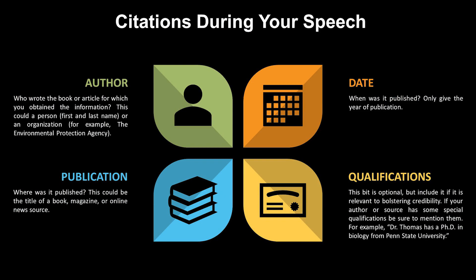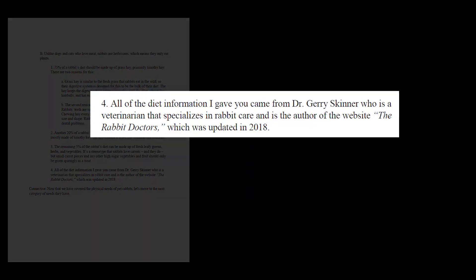If you put this information in your outline from the start, it's much easier to cite it when it comes time to perform. It doesn't matter which order you present this information in, as long as you have all three or four pieces. The three mandatory pieces are the author, the date, and the publication. The optional piece is the source's credibility.